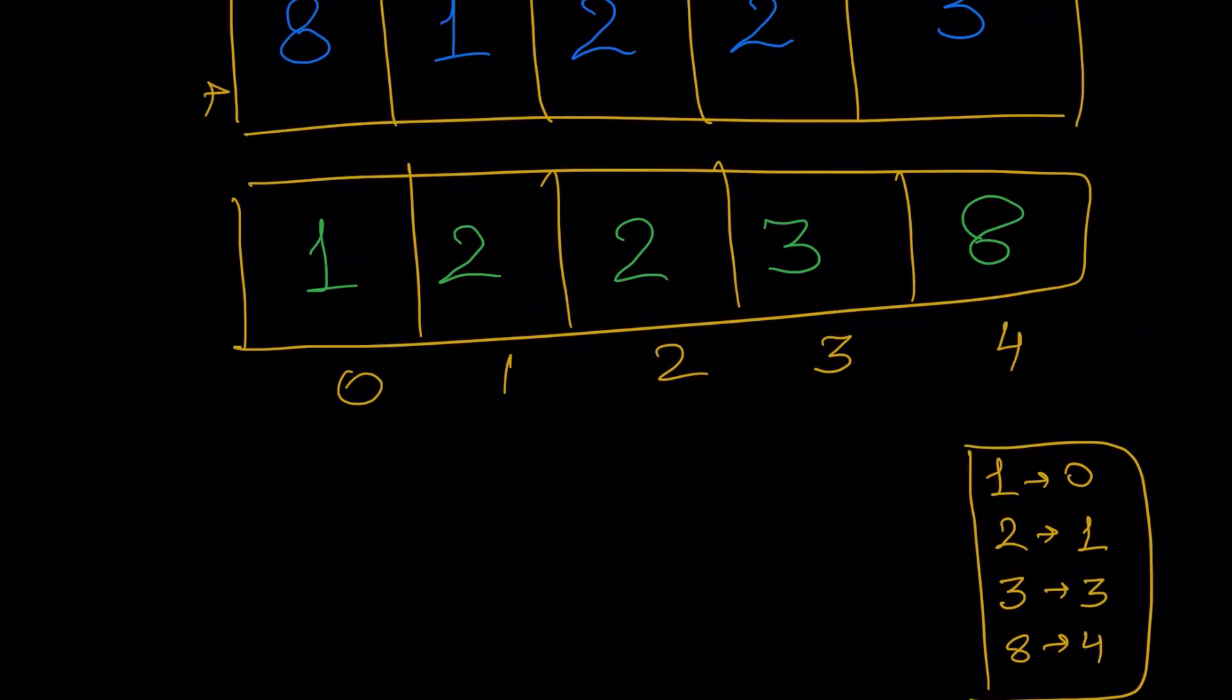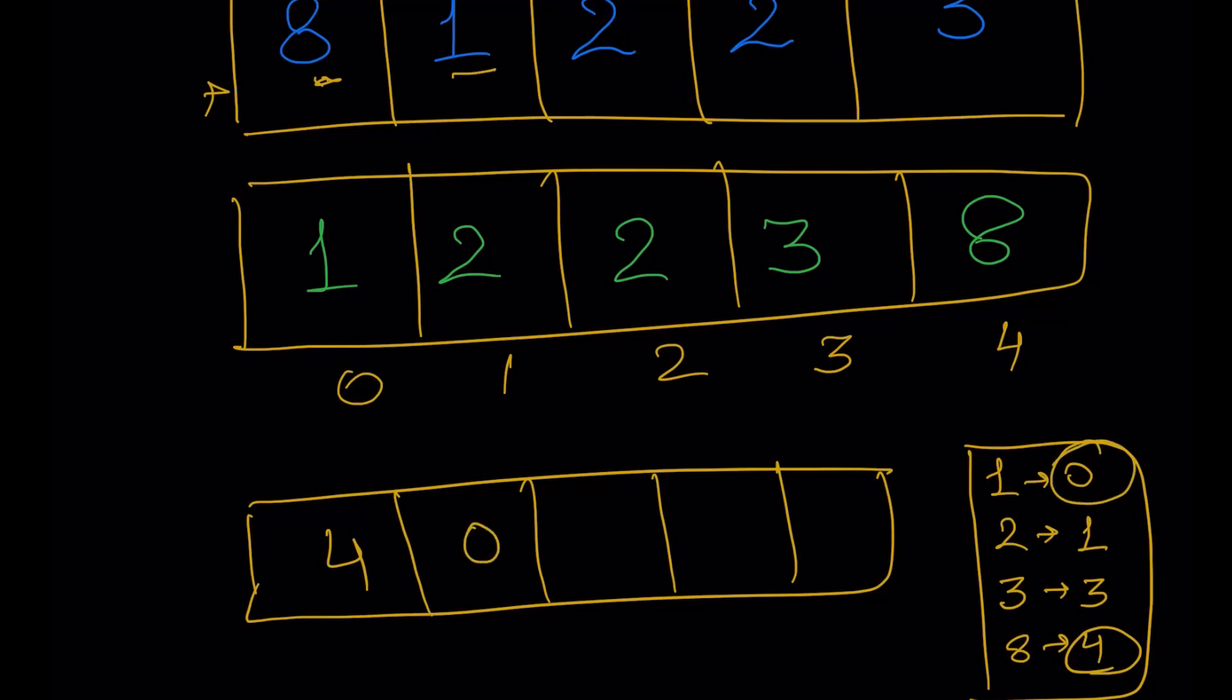we can just put the index value at the resultant array, which would be 8 has a value of 4. So we'll put 4, 1 has a value of 0. So we'll put 0, 2 has a value of 1, we put 1, again 1 and 3 has a value of 3. So this again gives us the same result. And now the time complexity is also lower.